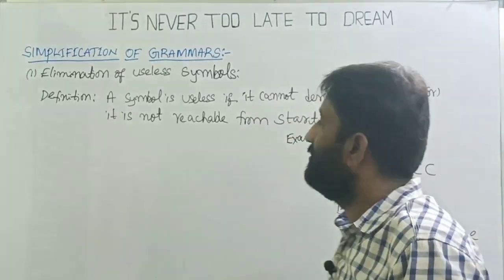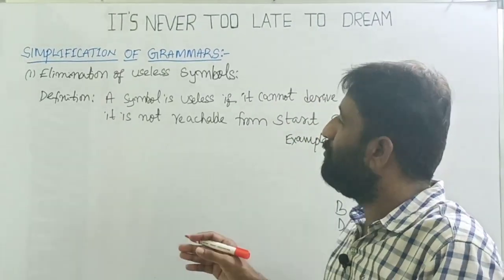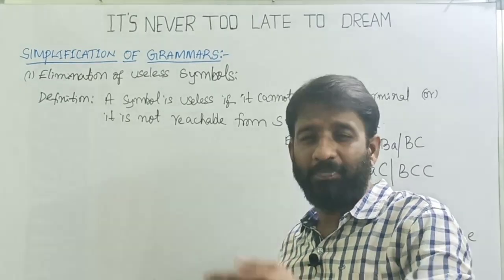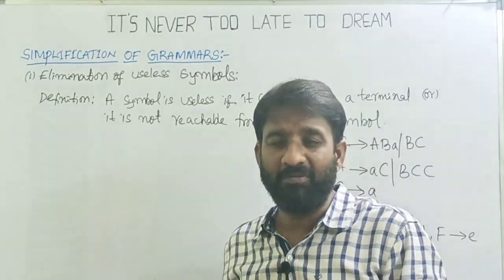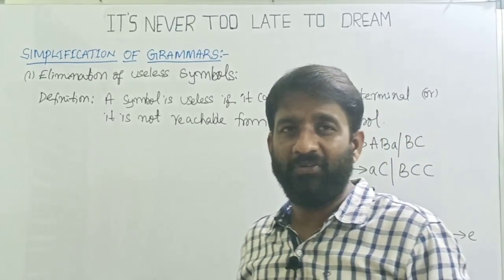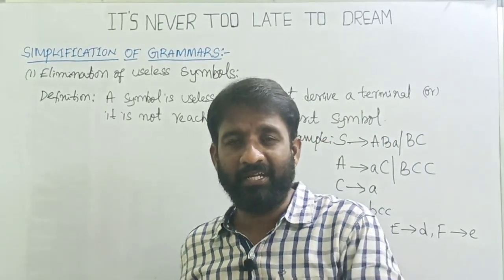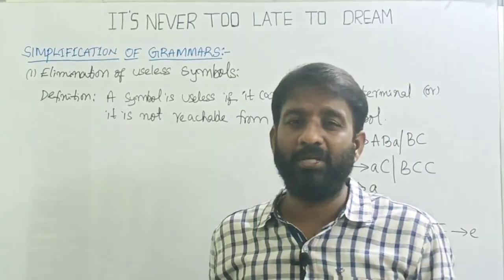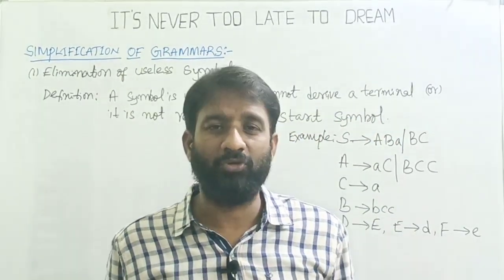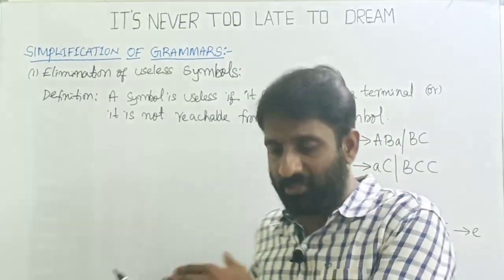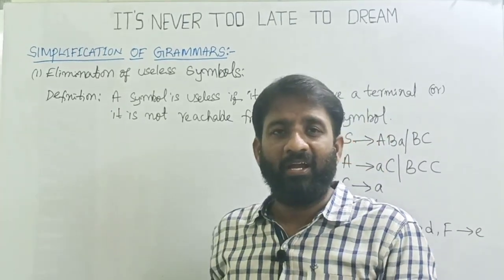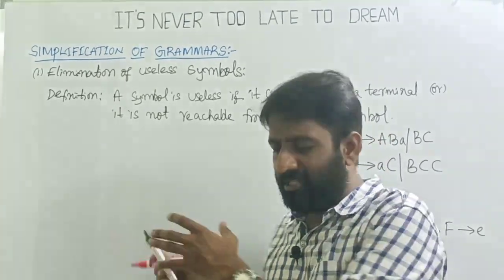Welcome back. The topic is how to simplify the grammar. As I told you in the previous lecture, grammar can be simplified in three steps. The first step is elimination of useless symbols, then the second step is elimination of epsilon productions, and the third step is elimination of unit productions. In this lecture, let's discuss how to eliminate useless symbols.